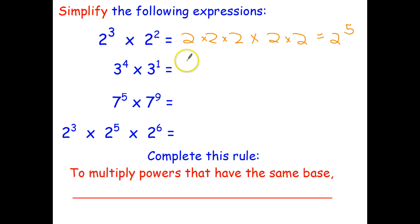Let's try this one. 3 to the power of 4 is 3 by 3 by 3 by 3 times 3 to the power of 1.